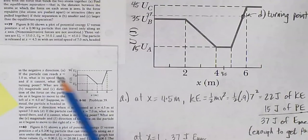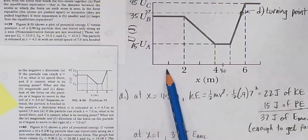If the particle can reach x equals 1, what is its speed there? And what is its turning point?